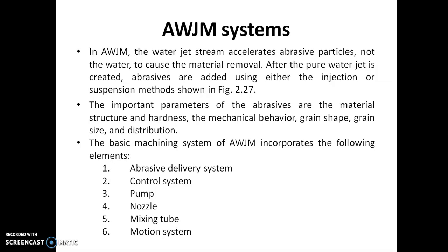Welcome. In this lecture we are going to discuss about abrasive water jet machining systems. In abrasive water jet machining, the jet contains both water and abrasives in a proportion of 70 to 1. The main important parameters of an abrasive jet are the size of the abrasive, the shape of the abrasive, the material, the structure, and its mechanical behavior and distribution.